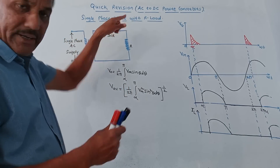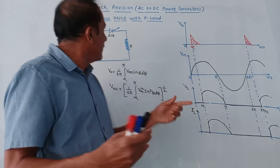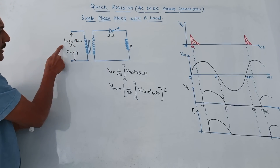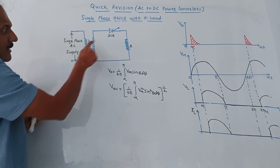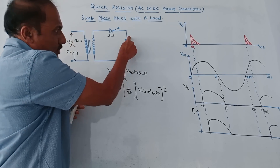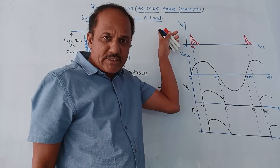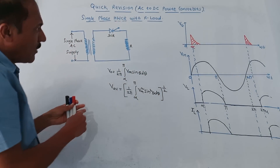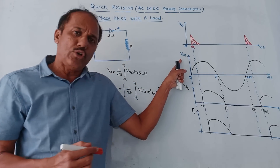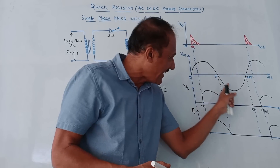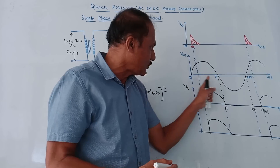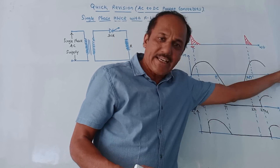The half wave controlled rectifier, also called half wave converter with resistive load, has a simple circuit diagram. At the input side we apply single phase AC supply, this is the SCR, and this is the load where we have connected resistance. The input voltage Vin is a pure sinusoidal voltage — a sine wave with positive half cycle, negative half cycle, from zero to pi to two pi, after which the cycle repeats.